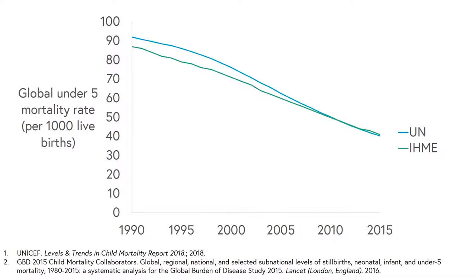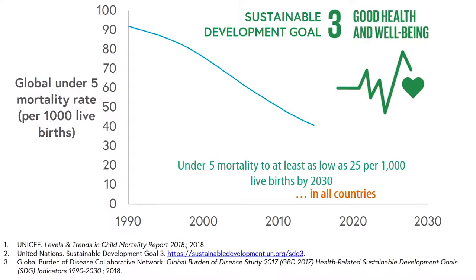If you are interested in learning more about the process of generating estimates for metrics like under-5 mortality and neonatal mortality, there is an appendix to the section which goes into more detail. Looking forwards at the Sustainable Development Goals: SDG 3 is to ensure healthy lives and promote wellbeing for all at all ages. Within this goal, there is a target to end preventable deaths of newborns and children under 5 years of age by 2030, which has been equated to an under-5 mortality rate of 25 or below.